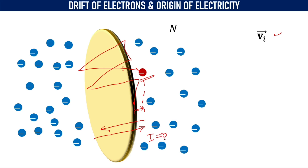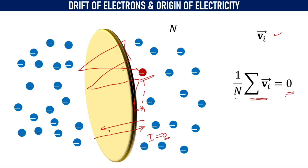There is no net displacement of all the electrons. Hence, when we consider the average initial velocity of n number of free electrons, that should be equal to zero. The sum of initial velocities divided by the number of free electrons, one by n, equals zero. The reason is simple: there is no preferred direction for the motion of free electrons in the absence of the external electric field. So the initial average velocity is zero.